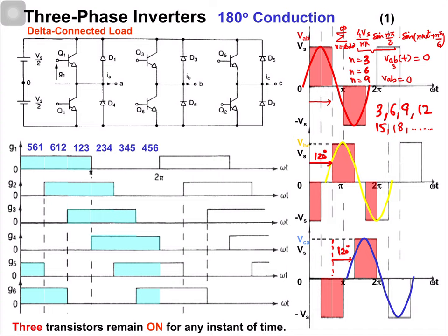This is because of the 60 degree dead band present in the half cycle. Because of that dead band, all triplen harmonics are cancelled — no triplen harmonic is present in the quasi-square waveform. Therefore, there will be no third harmonic or its multiples in the phase voltage, since for delta connected load the line voltage and phase voltage are equal.